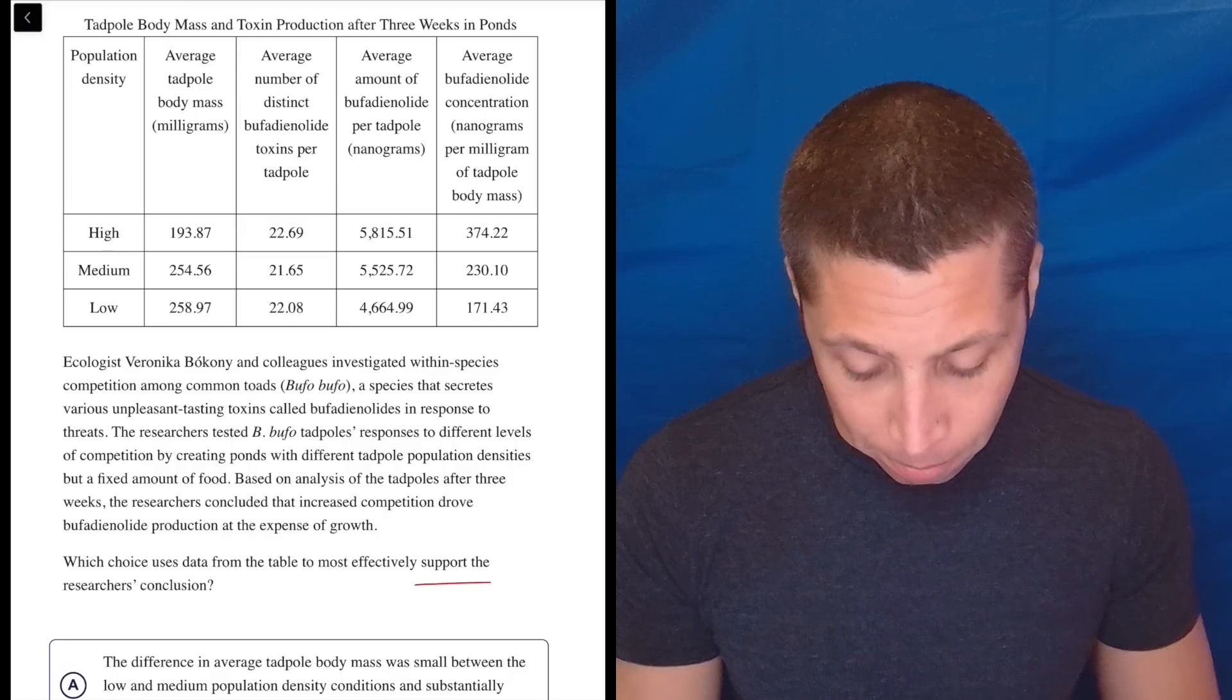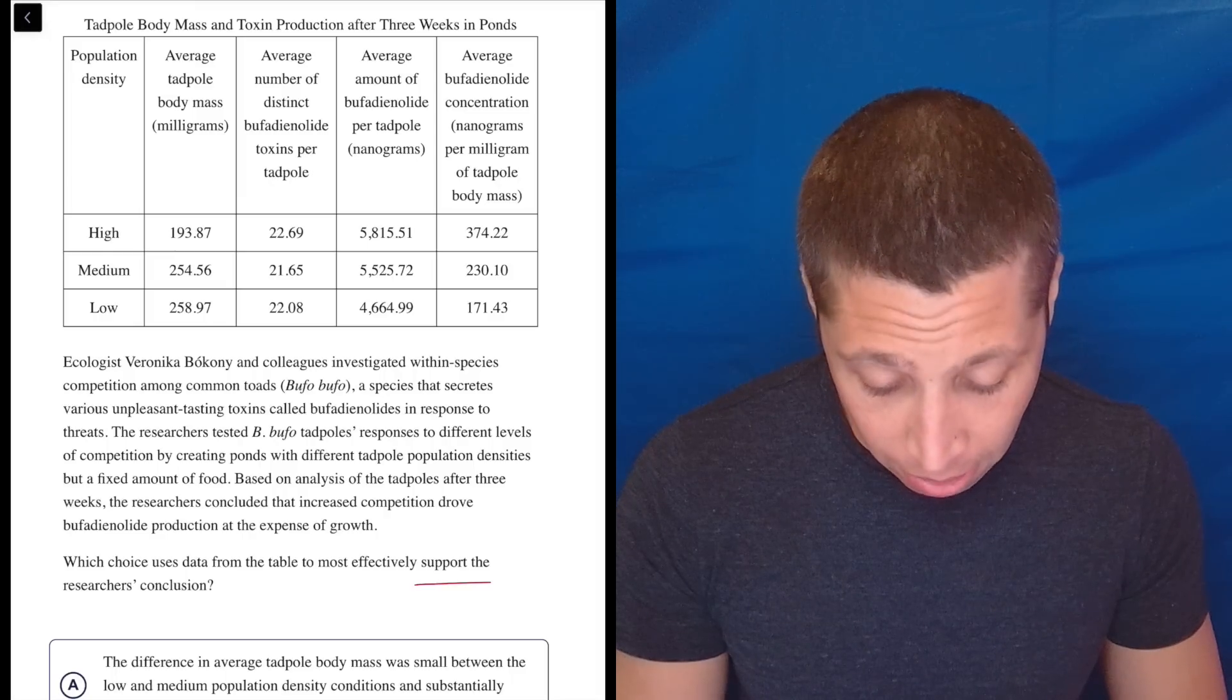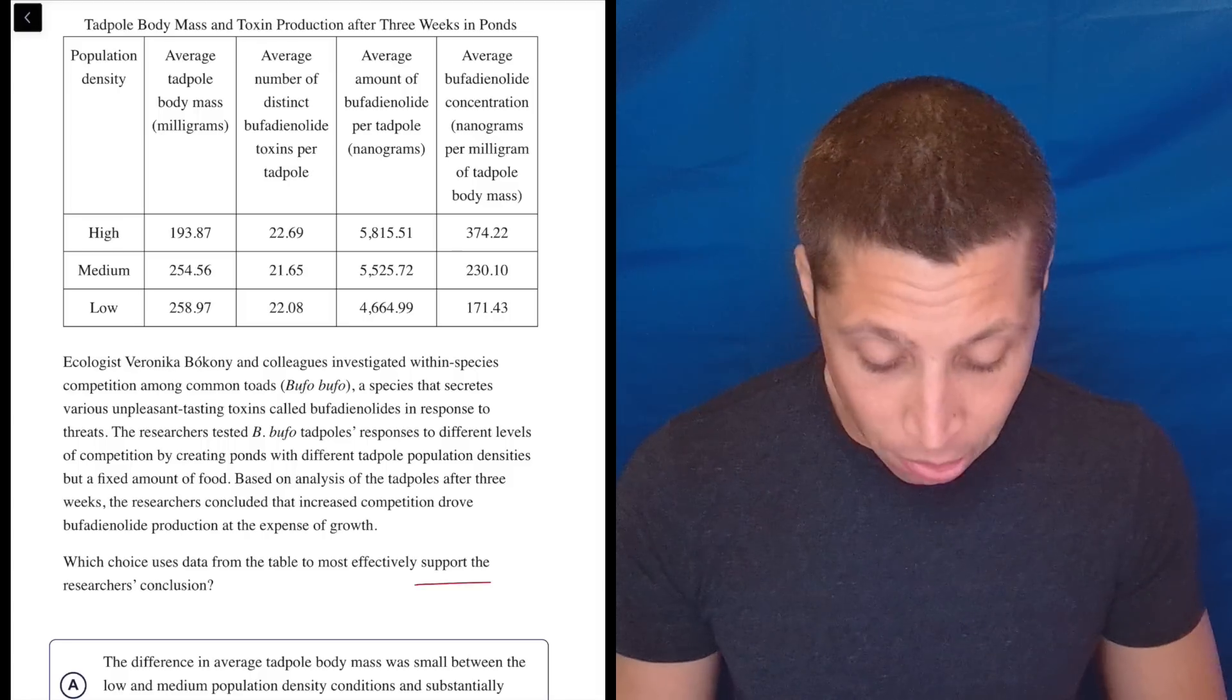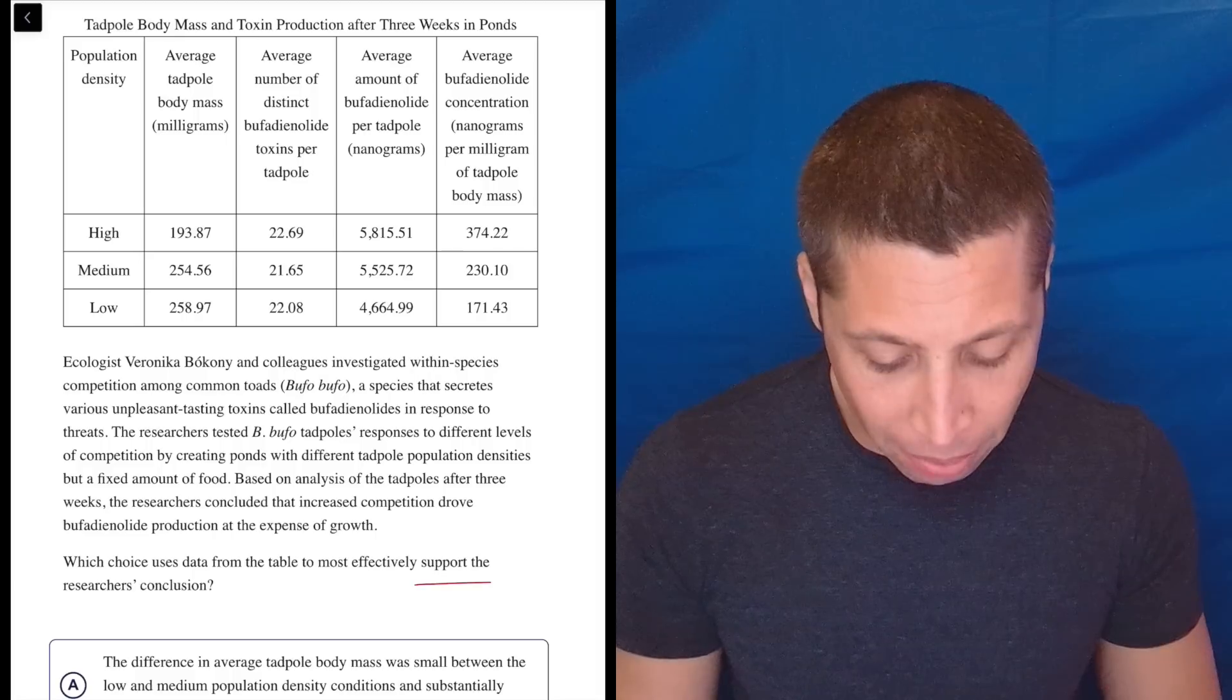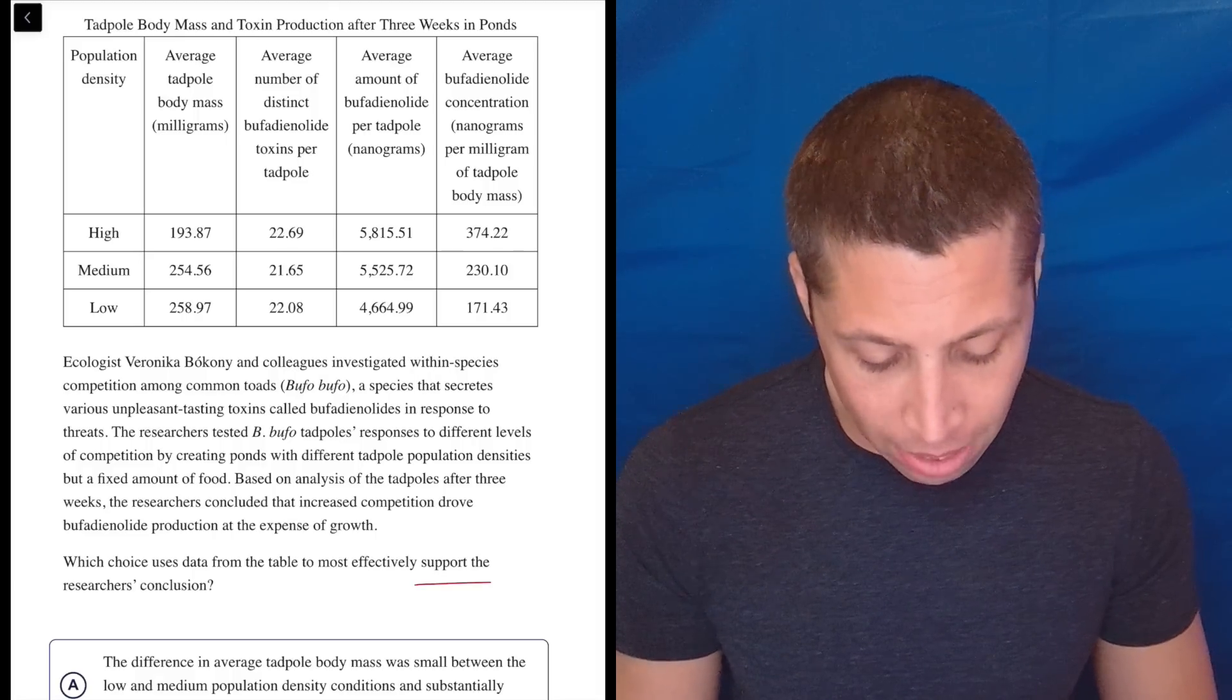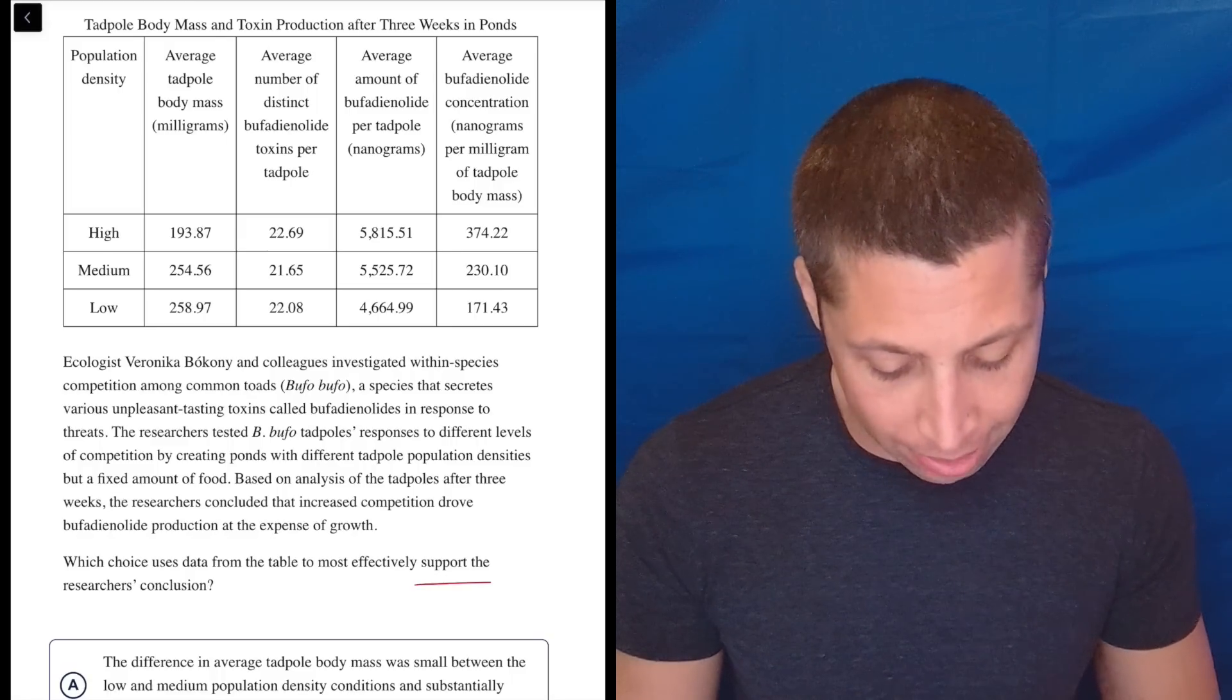So let's see what we get. This person investigated within species competition among common toads, a species that secretes various unpleasant tasting toxins called bufadienolide—I'm going to call them bufas—in response to threats. The researchers tested the tadpole's response to different levels of competition by creating ponds with different tadpole population densities, but a fixed amount of food. Based on analysis of the tadpoles after three weeks, the researchers concluded that increased competition drove bufa production at the expense of growth.